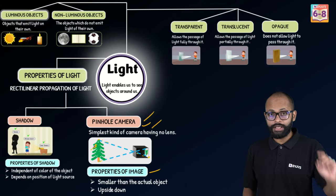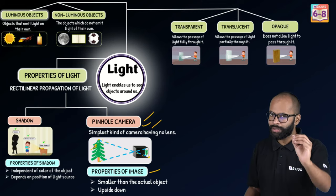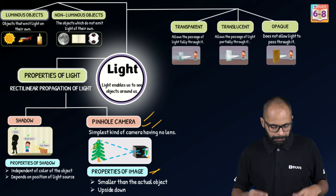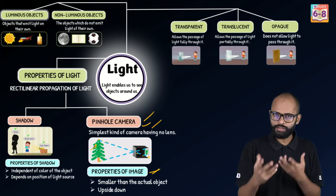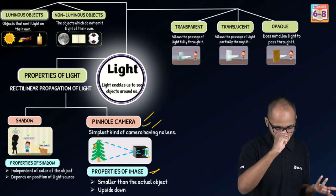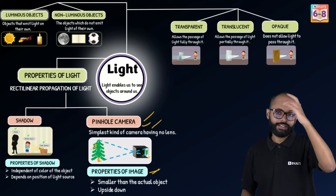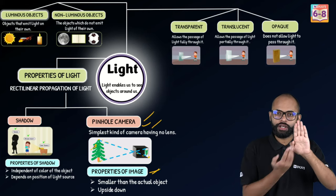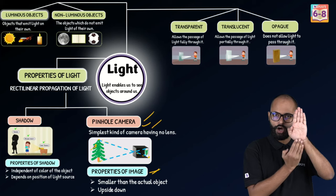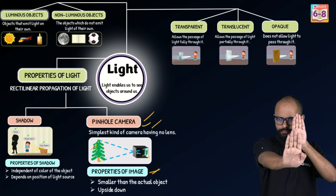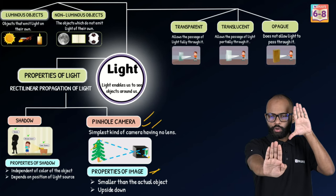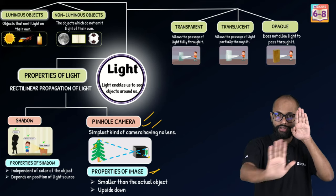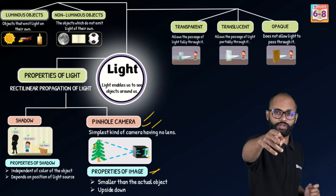What are the properties of the image formed in a pinhole camera? This is an important exam question. The image formed inside a pinhole camera is smaller than the actual object and is upside down. Also, if the object has something on the right, the image will have it on the left — right becomes left and left becomes right. This is very important; there are many questions on this.